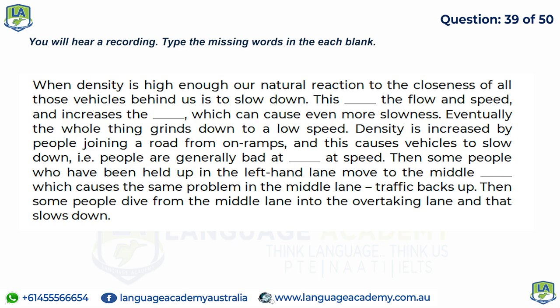When density is high enough, our natural reaction to the closeness of vehicles behind us is to slow down, reducing flow and speed and increasing density, which causes even more slowness. Eventually the whole thing grinds to a low speed. Density is increased by people joining a road from on-ramps, causing vehicles to slow down — people are generally bad at merging at speed. Then people held up in the left lane move to the middle lane, causing the same problem there, and some dive from the middle lane into the overtaking lane, slowing that down too.